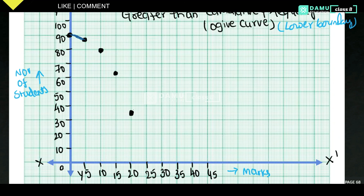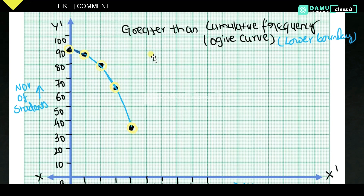Now we join all these points by hand to get the greater than ogive curve. The points are: (0, 90), (5, 88), (10, 80), (15, 62), and (20, 35). Joining them gives us the greater than cumulative frequency ogive curve.